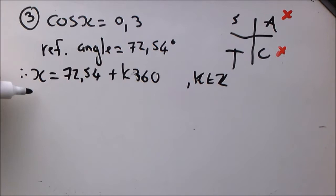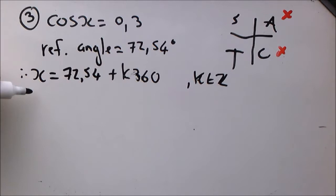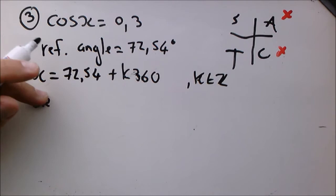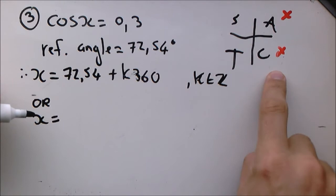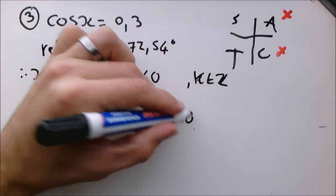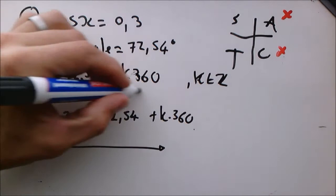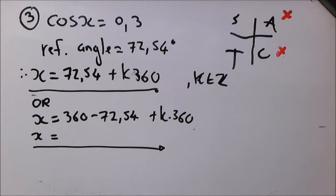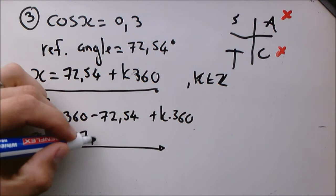Do not forget the other part of the answer. Leave some space open and say 'or x equals'. We are now working in the fourth quadrant, so this will be 360 minus the reference angle 72.54, plus k times 360. That gives 287.46 plus k times 360 degrees. These two will be your two general solutions to this question.